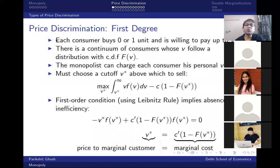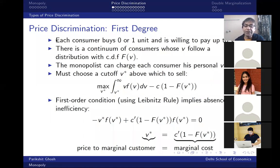The other problem with price discrimination is knowing who to charge how much — what is the willingness to pay of different consumers? That's not information written on their faces or in their credit reports. Sometimes sellers can make a crude approximation, knowing that on average Indian buyers are poorer than American buyers, but that's not true of every individual. There are affluent Indians and poor Americans.